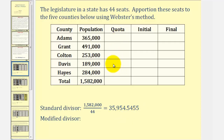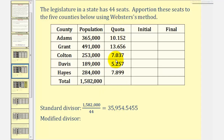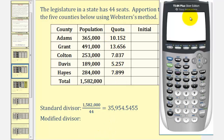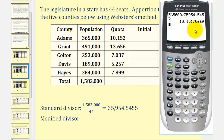To find the quotas, we take each population and divide by the standard divisor, which I've already done here to save some time. Let's go ahead and check at least one of them. To find the quota for Adams, we would take 365,000 and divide by 35,954.5455, giving us a quota of approximately 10.152. We would do the same for the four remaining counties.